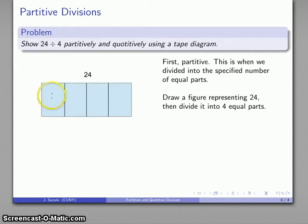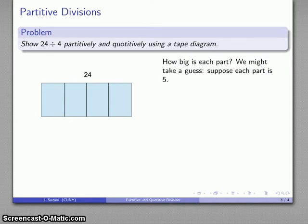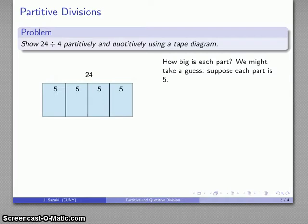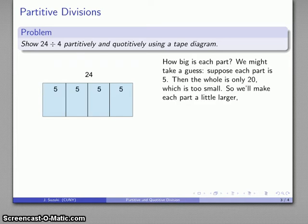Well, if this is 24, I want all of these parts to have the same size, and maybe I don't know how big those parts are, so I'll take a guess. Suppose each part is 5. Well, that's all of them are going to be 5, and that's not quite enough. That's 10, 20, so I am still not quite at 24 yet, so I've got to increase the size of those parts a little bit.